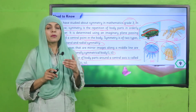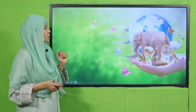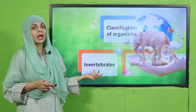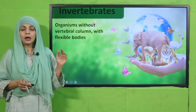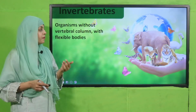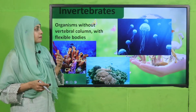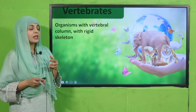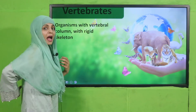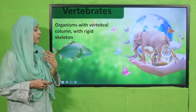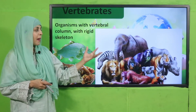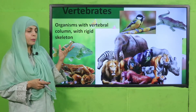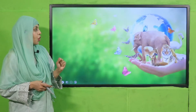Classification of organisms is into two groups: vertebrates and invertebrates. Invertebrates are animals without a backbone — no vertebral column — and examples are corals, starfish, and jellyfish. Vertebrates are organisms with a vertebral column, such as fish, frogs, and mammals like elephants, zebras, and lions. Birds and crocodiles also come under vertebrates.